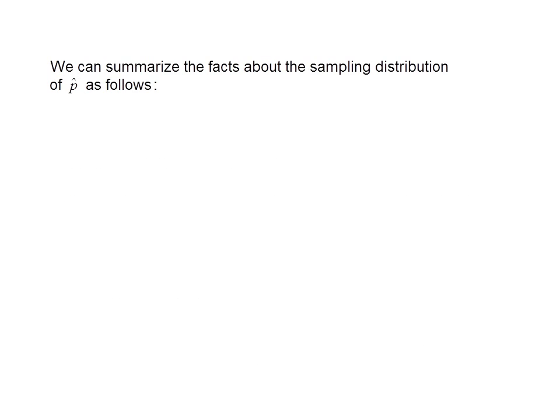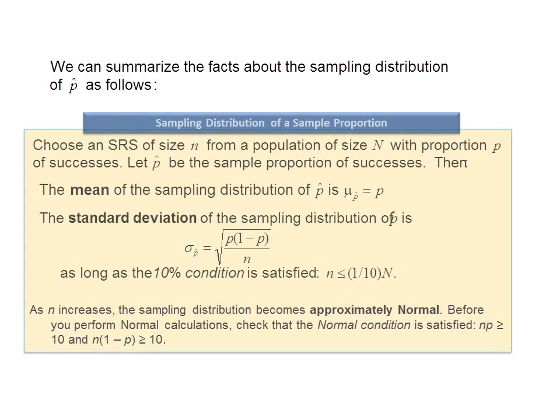Recall some of the things that we discussed, that the sampling distribution of p-hat has some characteristics. Namely, the mean of the sampling distribution of p-hat is the actual population proportion, which we represent by p.